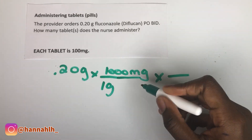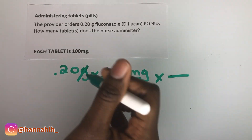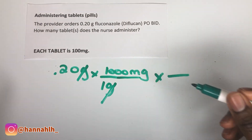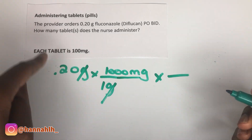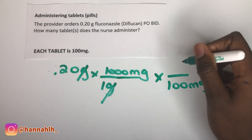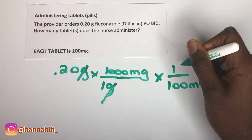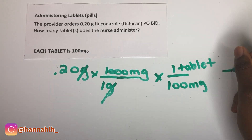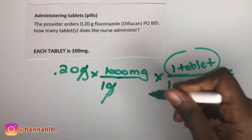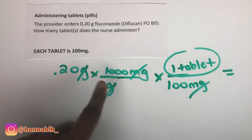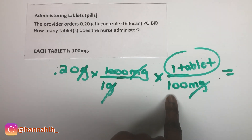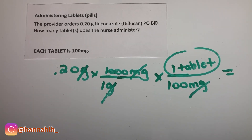You're multiplying that out — you want to cancel the grams because your answer is going to be in tablets. Grams has nothing to do with tablets, so cancel that out. Then cancel the milligrams using the fact that each tablet is 100 milligrams, so 100 milligrams equals one tablet. The milligrams cancel out, and once you multiply 0.20 times 1000, then divide by 100, your answer should be two tablets.